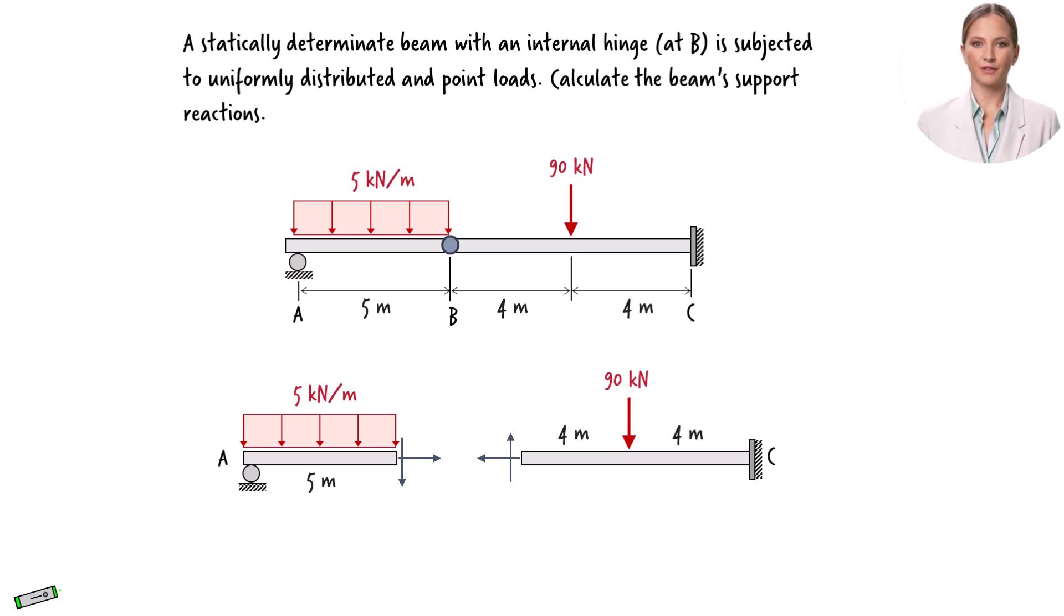Similarly, if a shear force is directed downward, its counterpart should be drawn pointing upward. To emphasize the equivalency in magnitudes, let's assign labels to these forces. We'll denote the magnitude of the axial force at the hinge as Bx. Similarly, the magnitude of the shear force will be represented as Vb. It's crucial to note that the axial forces at the hinge have the same magnitude of Bx, and the two shear forces also share an identical magnitude of Vb.